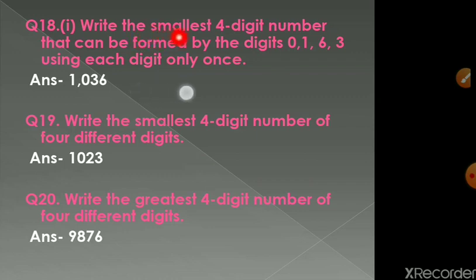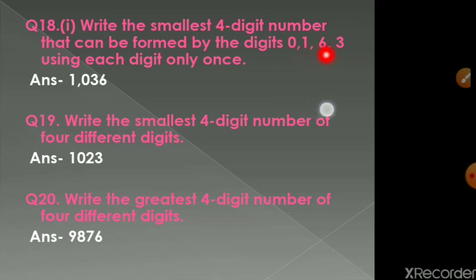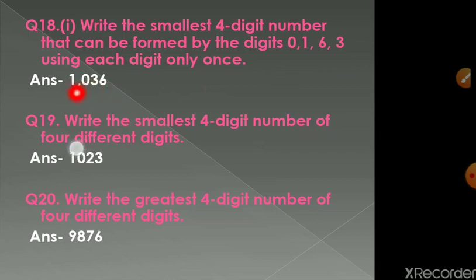Question number 18: write the smallest four-digit number formed by digits 0, 1, 6, 3, using each digit only once. We start with the lowest digit, but we can't start with zero as it won't make a four-digit number. So we start with 1, place zero in the second position, then arrange the remaining digits 3 and 6 in ascending order, giving us 1036.